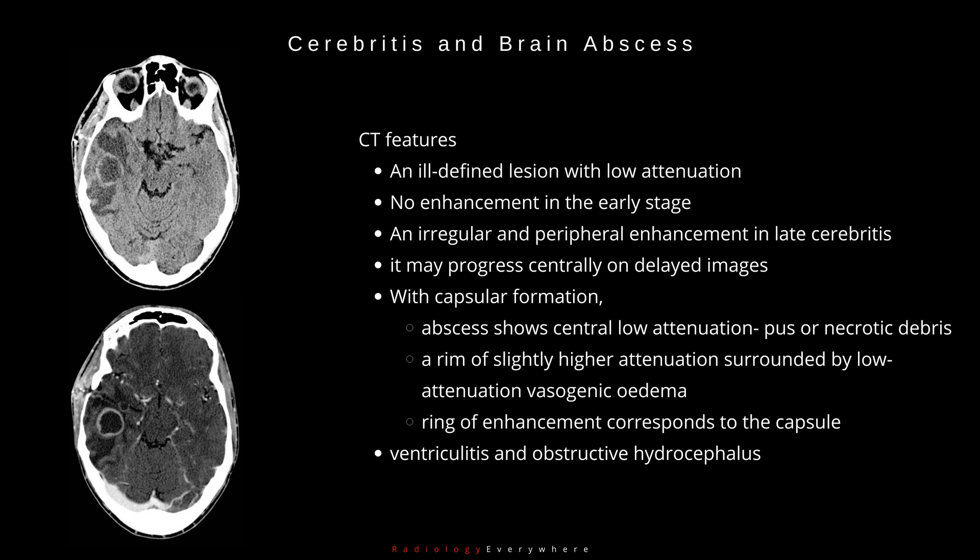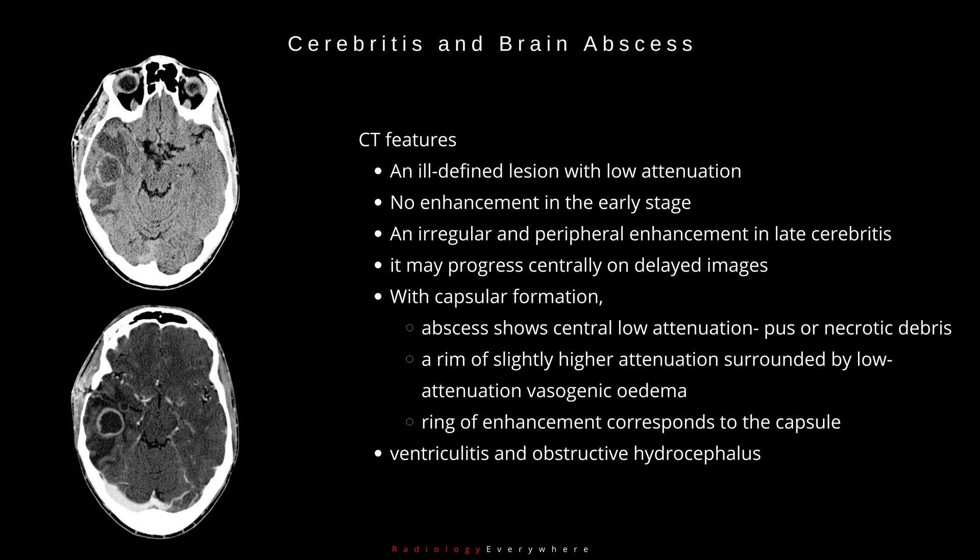CT features include an ill-defined lesion with low attenuation and no enhancement in the early stage, and irregular peripheral enhancement in late cerebritis, which may progress centrally on delayed images. With capsular formation, the abscess shows central low attenuation (pus or necrotic debris), a rim of slightly higher attenuation, surrounded by low attenuation vasogenic edema. A ring of enhancement corresponds to the capsule. Ventriculitis and obstructive hydrocephalus can also be evident.